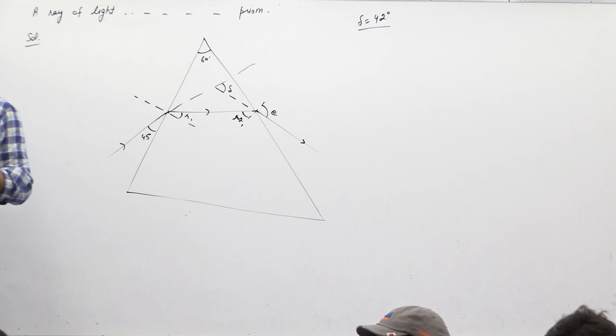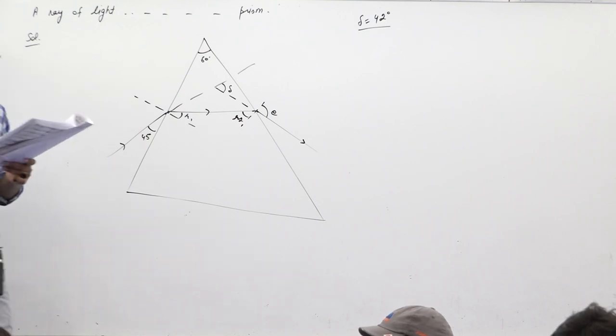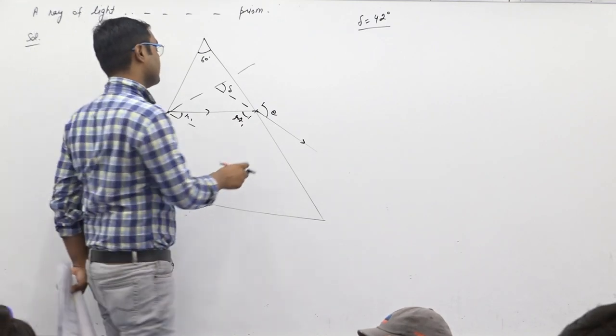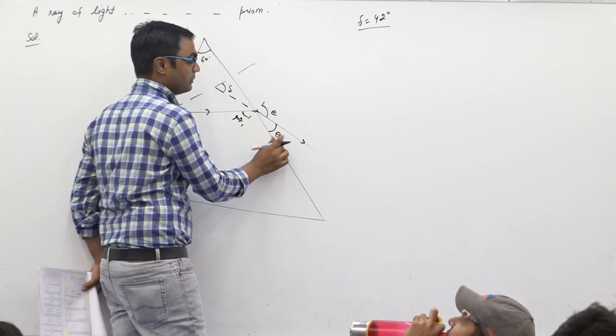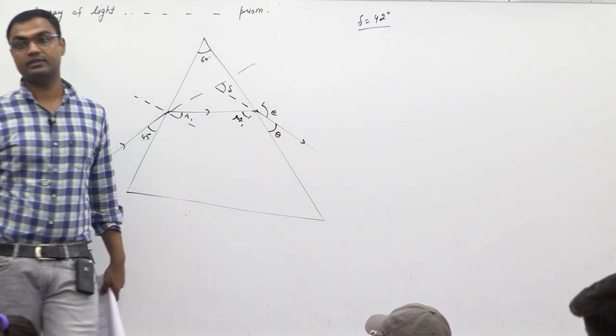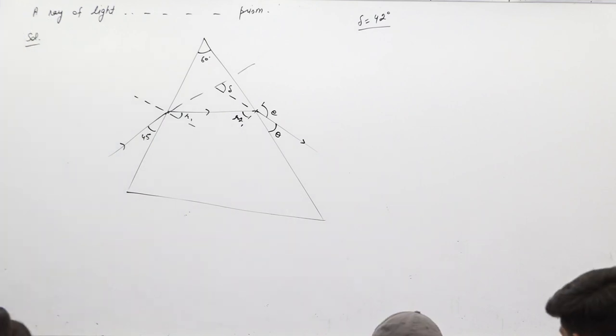Find the angle which the emergent ray makes with the emergent face of the prism. This is the emergent face, this is the emergent ray. We need to find the value of this angle.